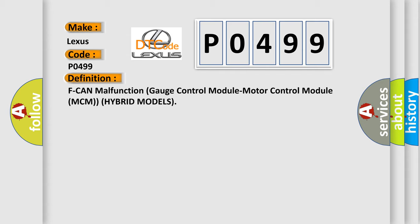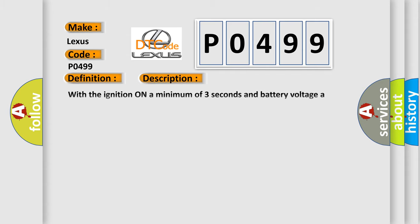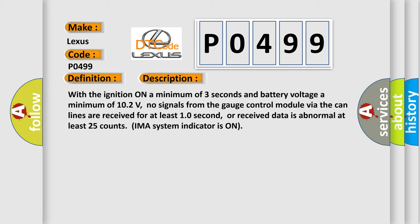And now this is a short description of this DTC code. With the ignition on a minimum of 3 seconds and battery voltage a minimum of 10.2 volts,